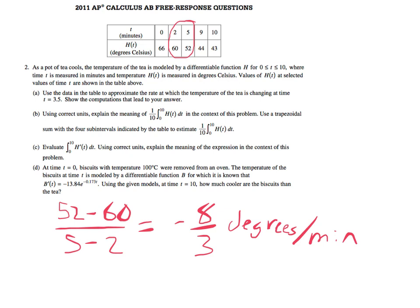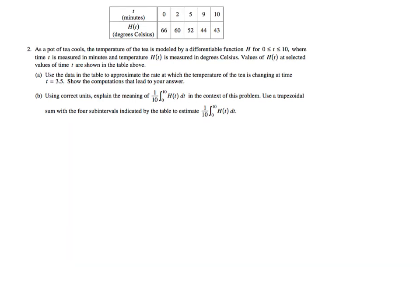Going on to part B. In part B, it says using correct units, explain the meaning of this integral in the context of this problem. Then use a trapezoidal sum with the four subintervals indicated by the table to estimate that integral. Well, if we remember, that just means the average temperature. Well, I should back up. This expression should look familiar to us. It should look like what we know is the average value of a function formula. So that's all this means. It means the average value of this function H(t) on the interval from 0 to 10.